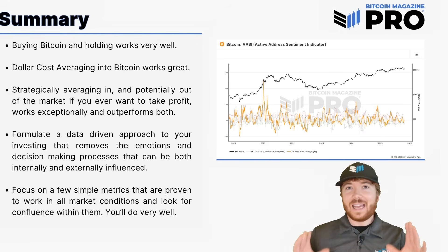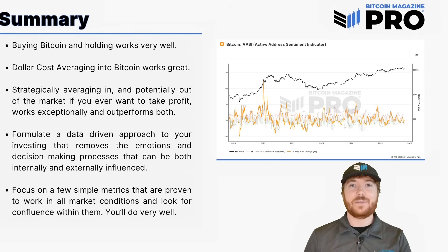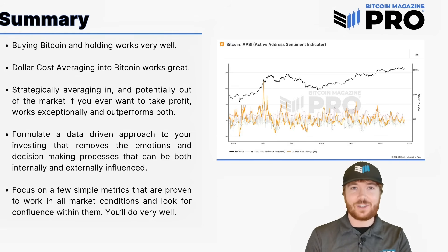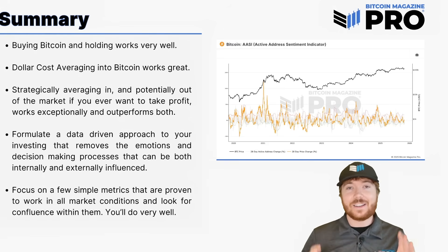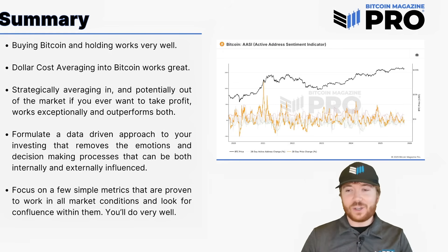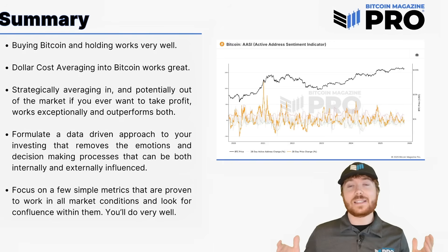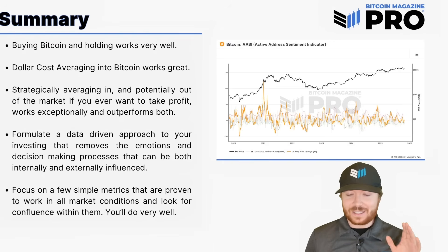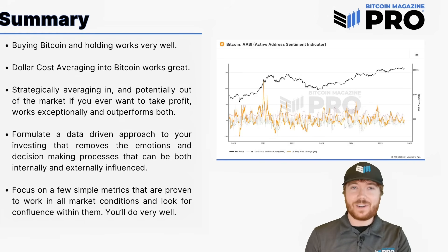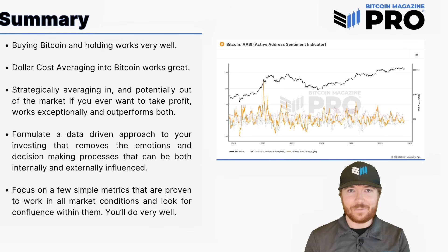If you are a site subscriber, not only do you get access to the TradingView indicators to do this, but also email alerts, which are a massive lifesaver — so when the active address sentiment indicator actually flashes, you'll know immediately without having to check the charts every single day. If you like this video, please visit bitcoinmagazinepro.com where you can check out all the resources discussed today, as well as many more — API access, TradingView indicators, industry reports, all for a fraction of the standard industry price. Let me know your thoughts on implementing a strategic dollar cost averaging approach, or any other metrics you're using in your own strategy.